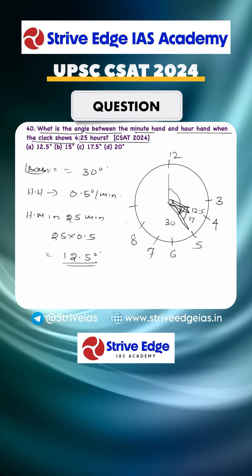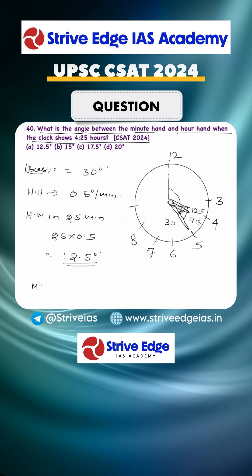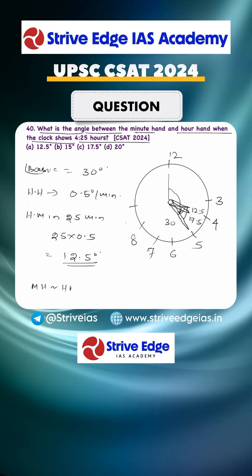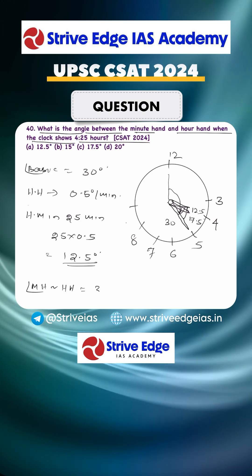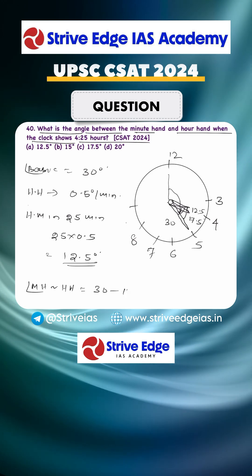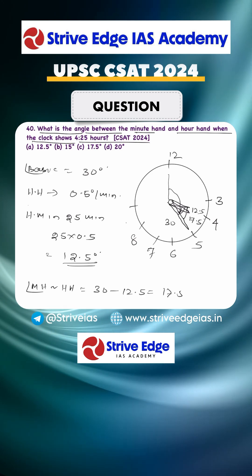The answer is 17.5 degrees. The angle between the minute hand and hour hand equals 30 minus 12.5, which is 17.5 degrees. So the answer is C.